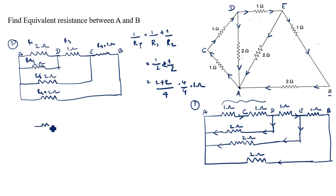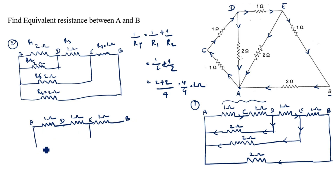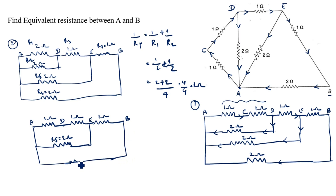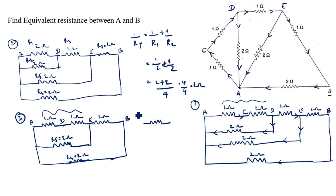So that parallel combination comes to 1 ohm. We redraw again: here is 1 ohm, here is 1 ohm, here is 1 ohm, here is 1 ohm. Nodes are D, E, A, and B with a 2 ohm resistor joining as R6 equals 2 ohm. We again add the series resistors: 1 plus 1 equals 2 ohm. This is the third and fourth step.